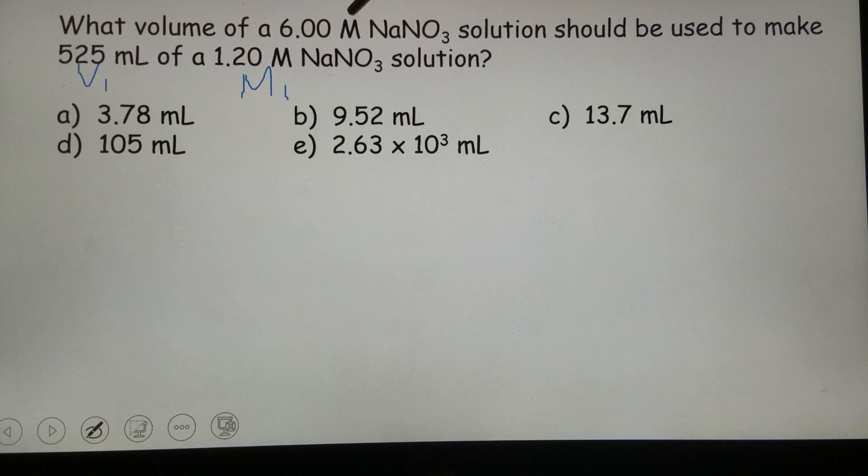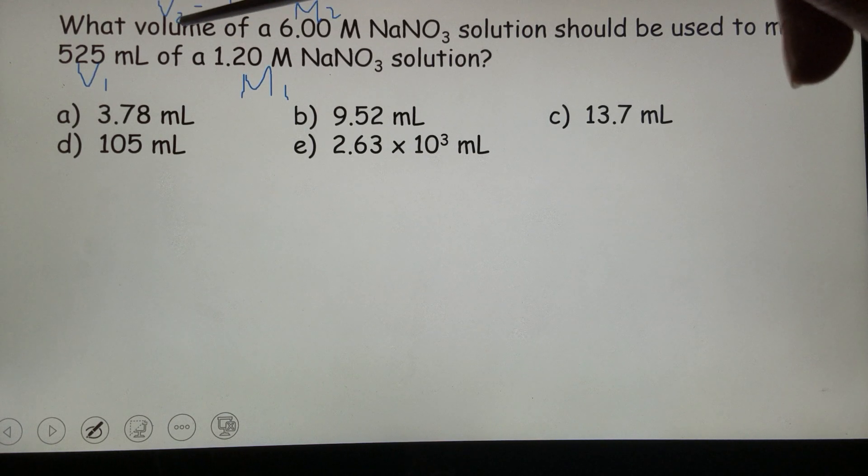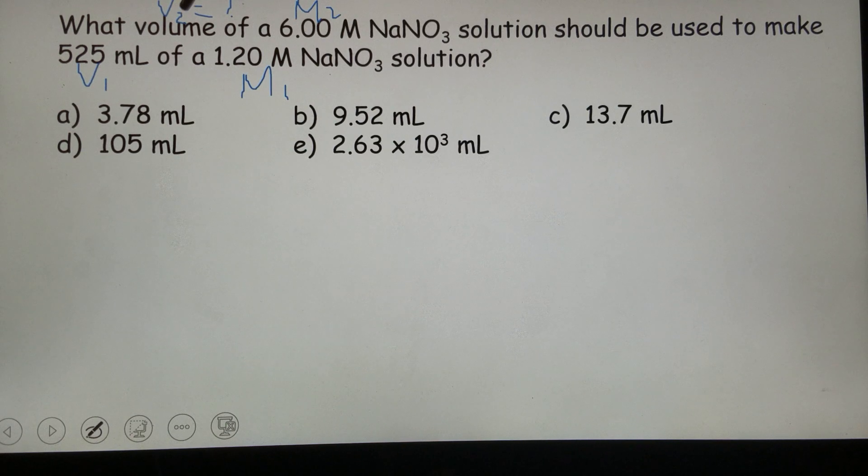And now you see this volume and this molarity, they also go together. So we just simply label them M2V2 and obviously V2 is the only one we need to work on, so we know all the other values. So this is the only one we do not know the value.